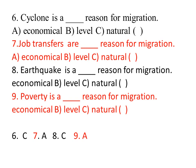Eighth and ninth question: poverty is a dash reason for migration. Options include economical reason. Poverty is an economical reason for migration. Answer A is the right answer.